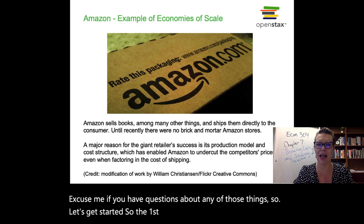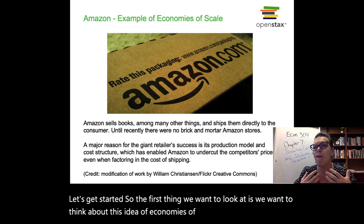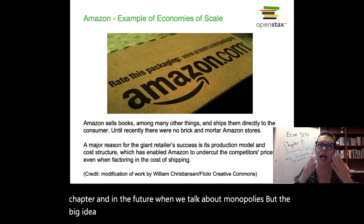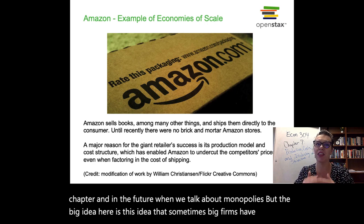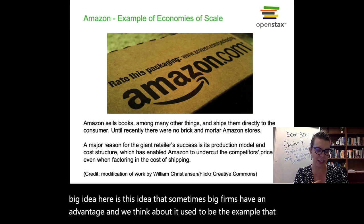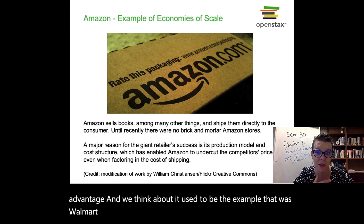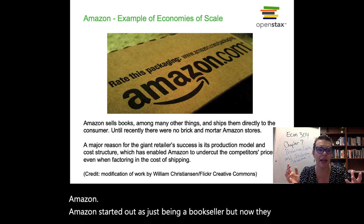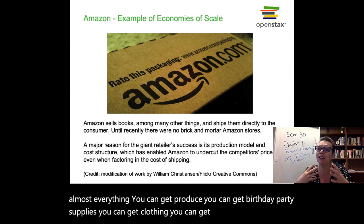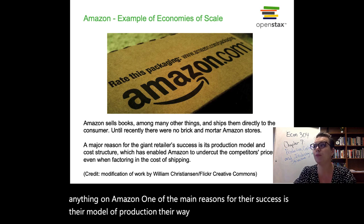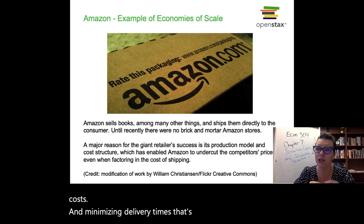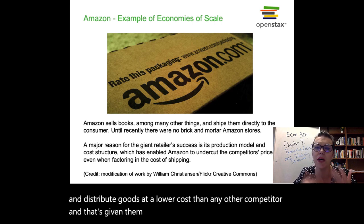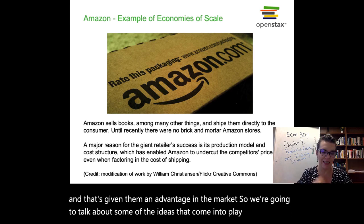The first thing we want to look at is this idea of economies of scale. We're going to talk about economies of scale a lot in this chapter and in the future when we talk about monopolies. The big idea is that sometimes big firms have an advantage. It used to be that the example of that was Walmart — now the example is really Amazon. Amazon started out as just a bookseller, but now they sell almost everything: produce, birthday party supplies, clothing, auto parts. One of the main reasons for their success is their model of production, their way of minimizing costs and minimizing delivery times. That's enabled Amazon to produce and distribute goods at a lower cost than any other competitor, giving them an advantage in the market.